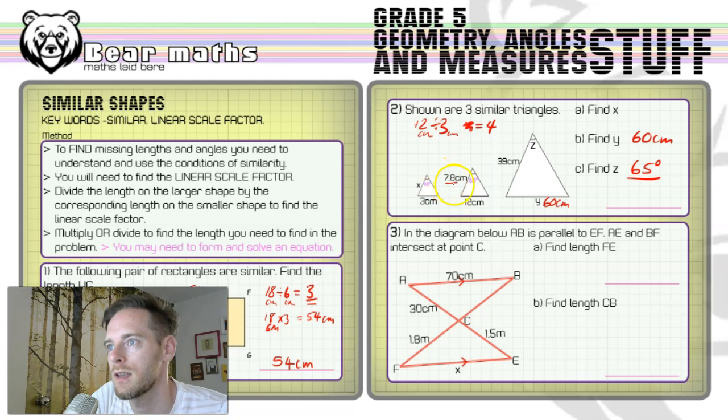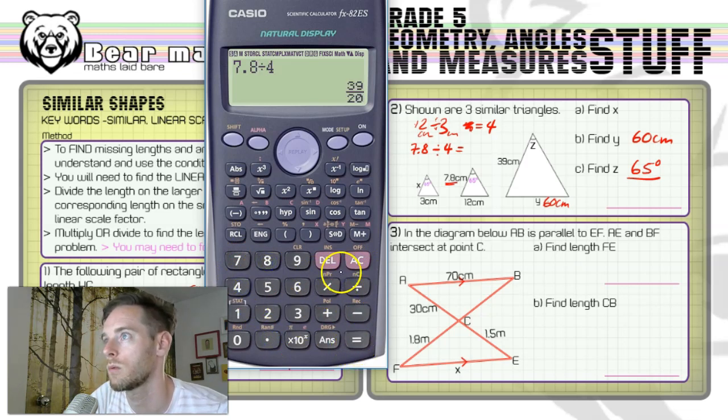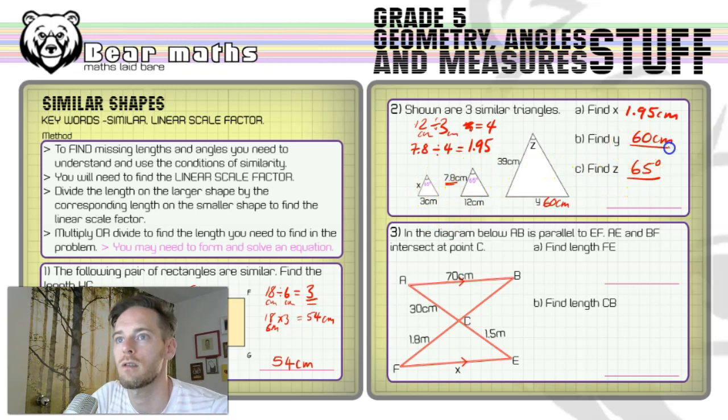Then we're going to have to take this 7.8 and we want the smaller length this time. We don't want a larger length. So we're going to divide by that scale factor and that's going to tell us the answer to the problem. So 7.8 divided by 4 equals 1.95. Which makes sense because it's a smaller length than the middle triangle's length, right? And we've got it the right way around. There's our three different answers. Finding X, finding Y, finding Z. Z is the easiest, like I said at the beginning because the angle's always going to be the same.